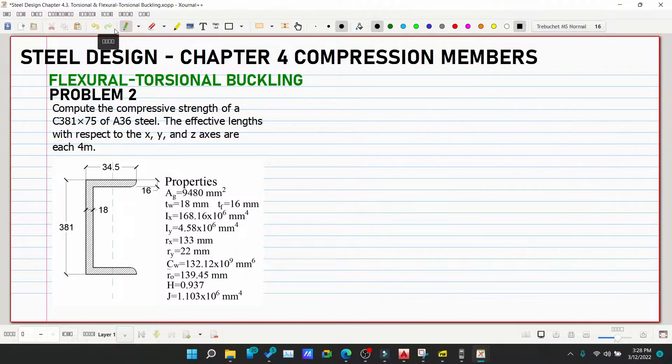Hello guys, welcome back to CE Box tutorial channel. This is our Problem Number 2 for flexural-torsional buckling. Compute the compressive strength of a C381×75 of A36 steel. The effective lengths with respect to the x, y, and z axes are each 4 meters.